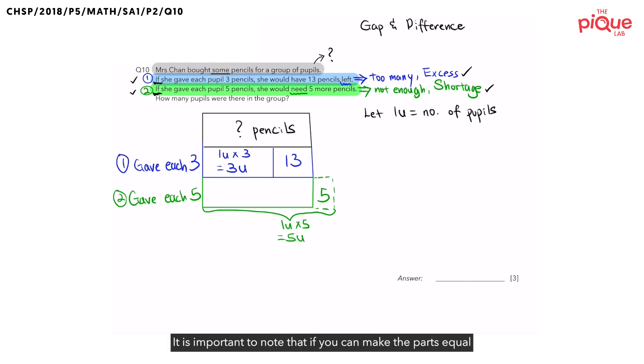It is important to note that if you can make the parts equal for your model, always do it and this will help you to solve the question. Let's copy and paste the 13 in case one to case two model. What else can we see and indicate on the model to solve the question? There is a clear gap in the units and in this case, it is five units minus three units which will give us two units.